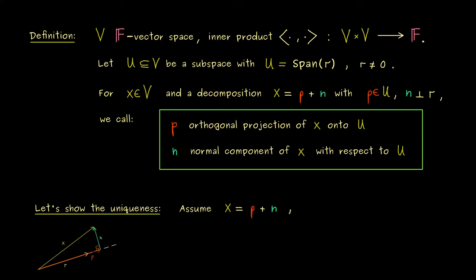Otherwise it would be strange to speak of the orthogonal projection if we had more than one. Therefore the first thing we should do now is to prove the uniqueness. Indeed, the picture should already tell us that we cannot change the vectors here without changing one of the properties. But now let's prove it mathematically. Which means we assume that we have two decompositions for x, and for the second one we just use a tilde on p and n.